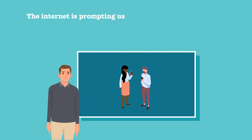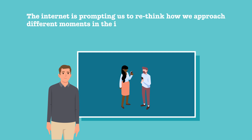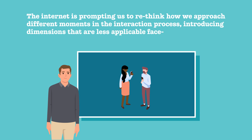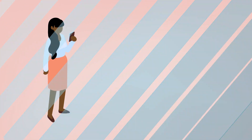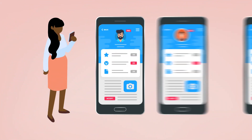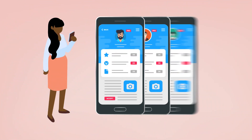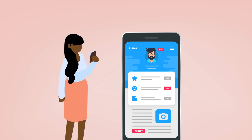According to Lewis, the internet is prompting us to rethink how we approach different moments in the interaction process, introducing dimensions that are less applicable face-to-face. For example, online users can browse through a staggering number of profiles at length and choose who to interact with. They can also interact with people without the prospect of ever meeting them and can ignore messages from people they do not wish to connect with.